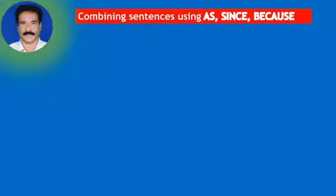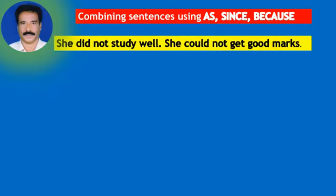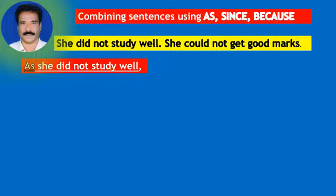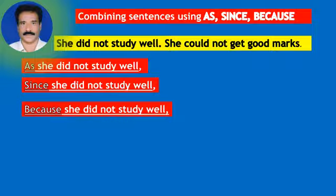Combining sentences using as, since, because — another example. Observe the two sentences: She did not study well. She could not get good marks. Why couldn't she get good marks? The reason is she did not study well. The reason is in the first sentence. As, since, or because are used in the first sentence to change it into a subordinate clause.